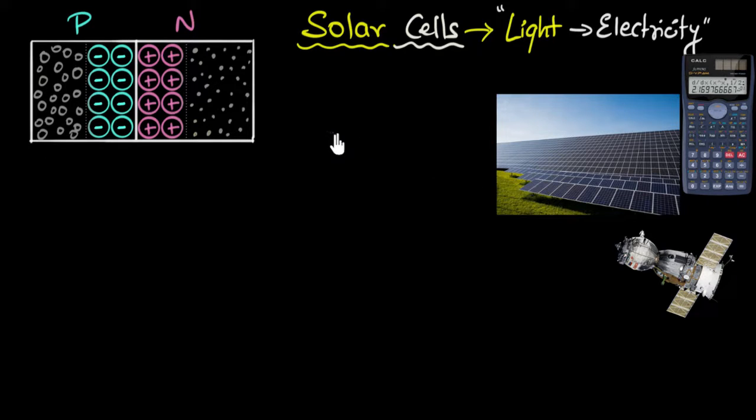Okay, but the question now is, what would happen if we were to shine light over here? What happens if we shine light on our solar cell? Well, let's go to our band structure to understand what happens.